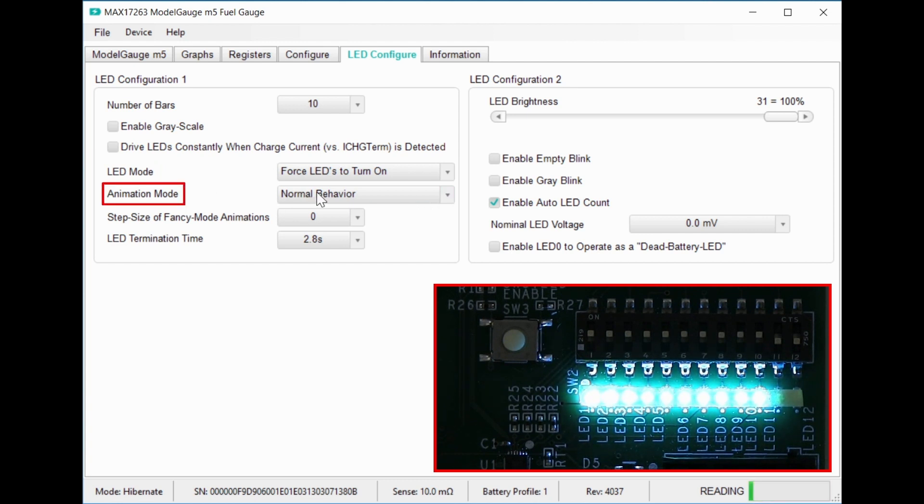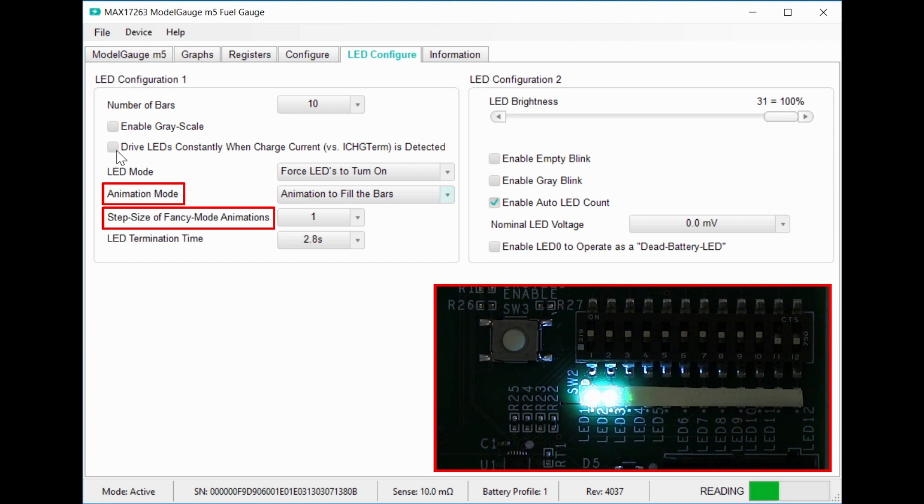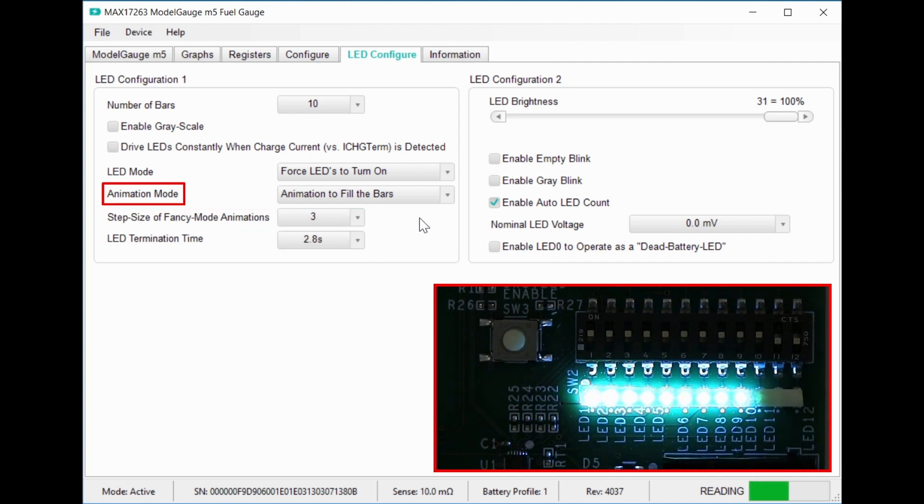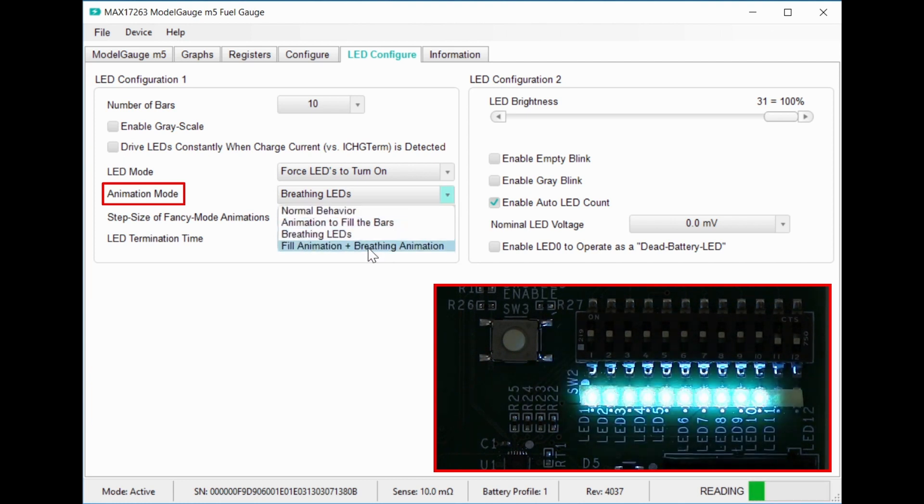The animation mode gives you some options on how the LEDs light up, and the step size sets the speed. This fill bars animation does this, and if I change the step size to 3, it goes 3 times faster. The breathing LEDs animation fades them in and out like this, or you can combine them like this.